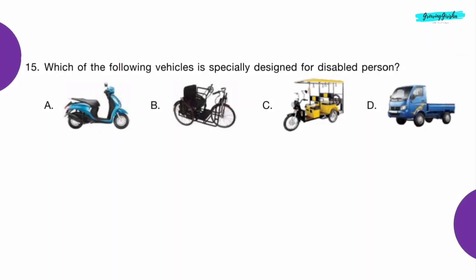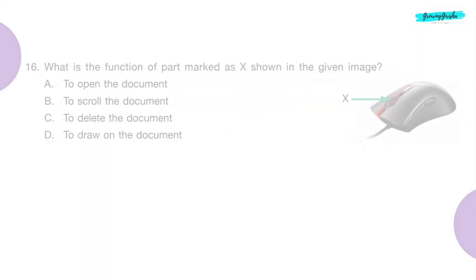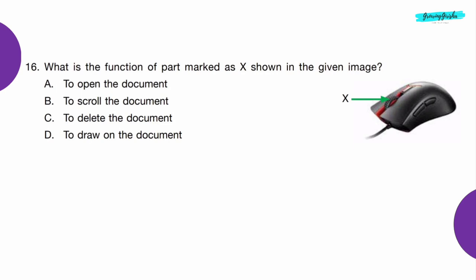Question 15: Which of the following vehicles is specially designed for a disabled person? Option B — Wheelchair.